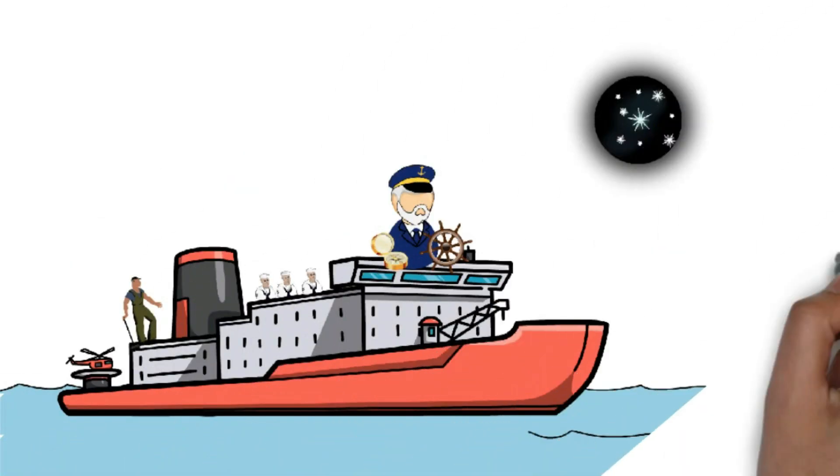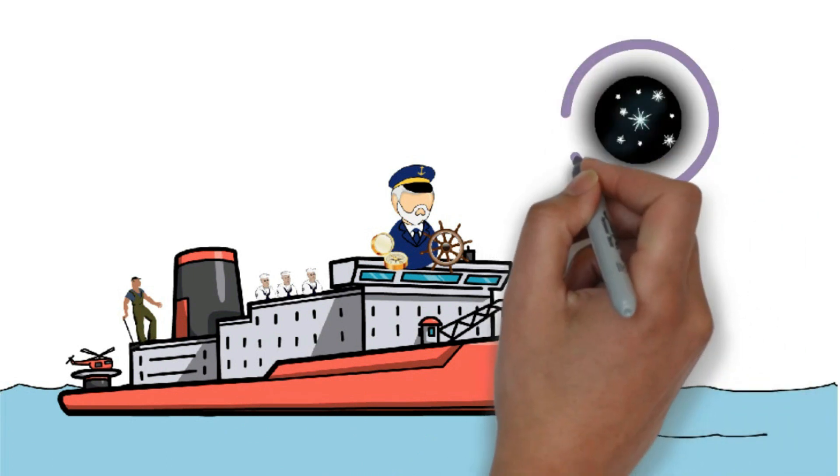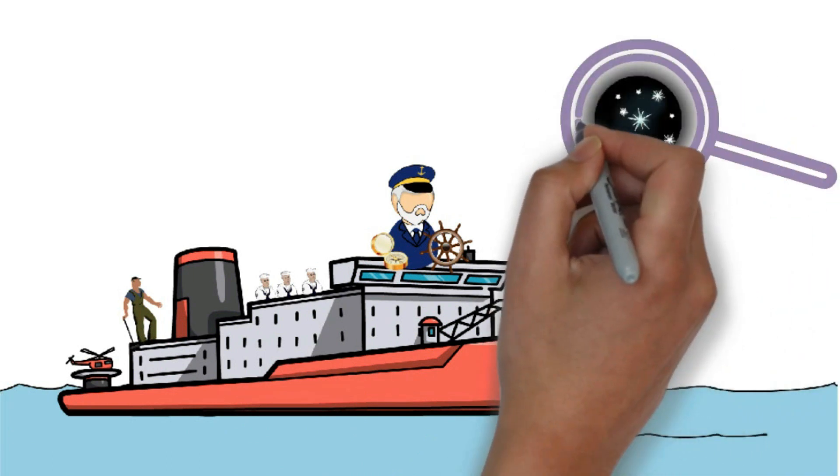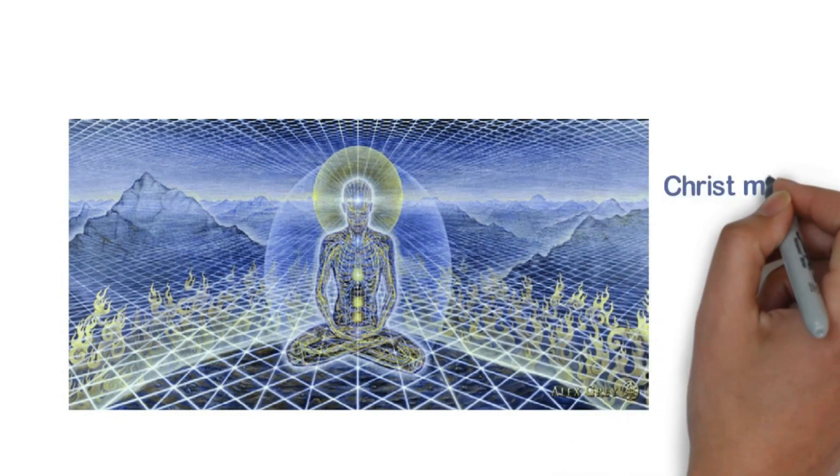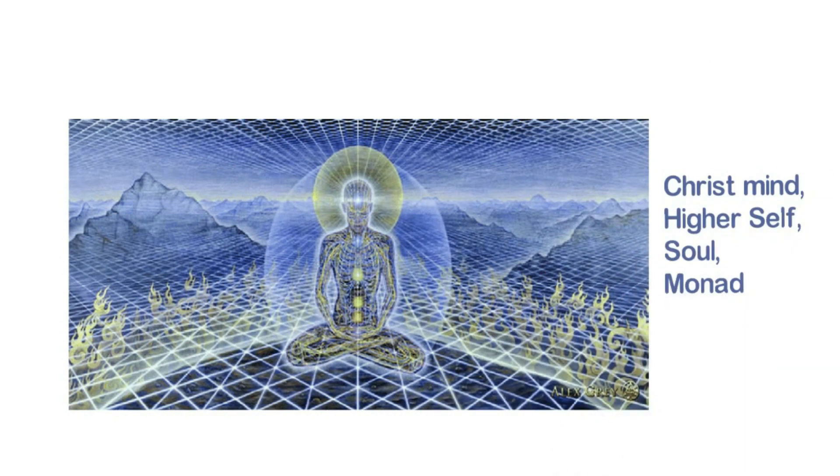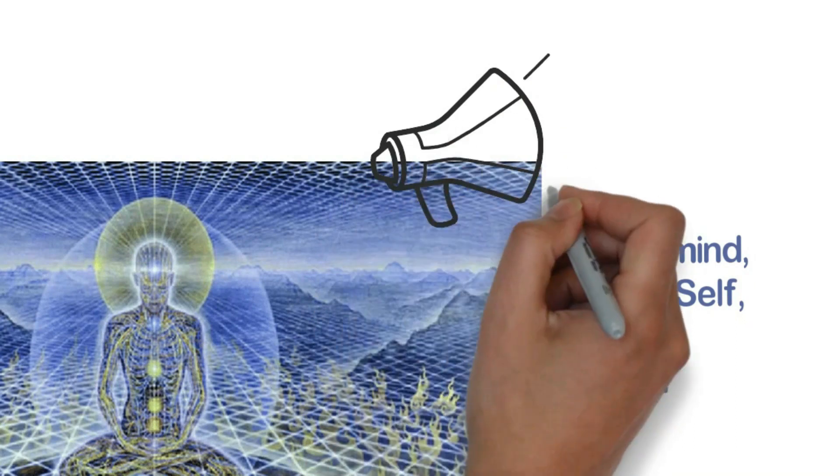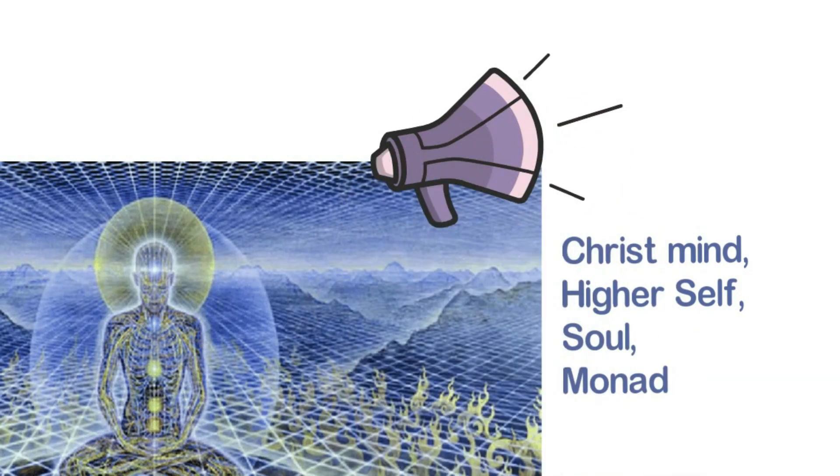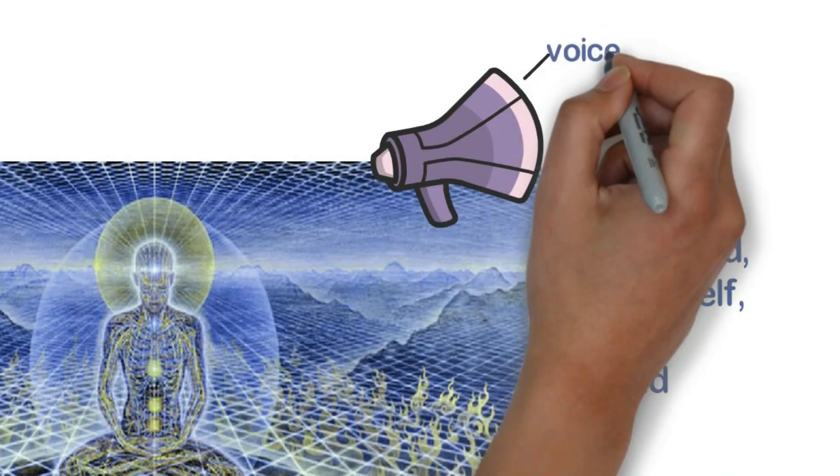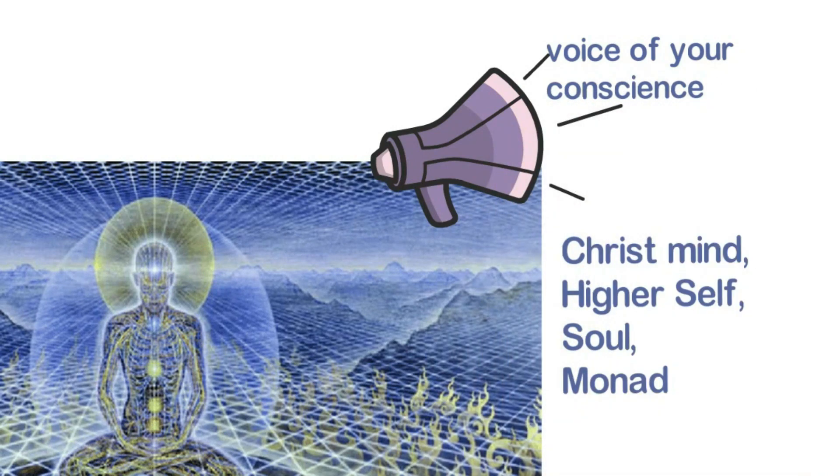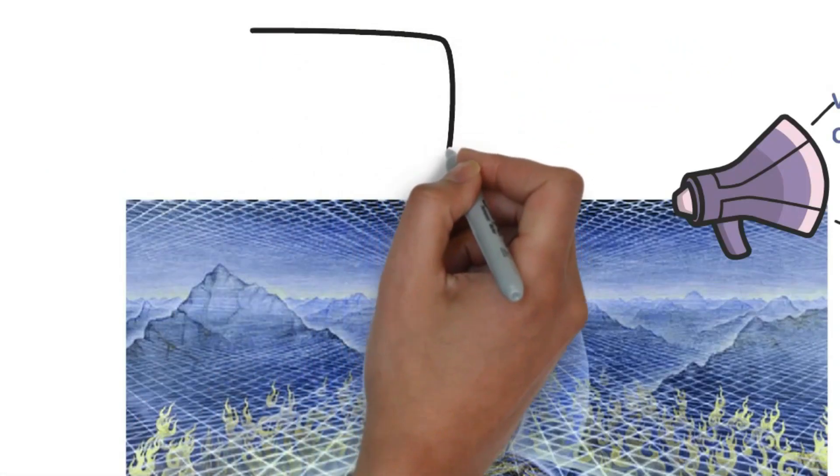Now, moving along to the superconscious mind, this is the mind that is represented by the north star in our analogy. This mind is also called Christ mind, higher self, soul, monad. And for simplicity, I have clubbed all these terms under the umbrella of superconscious mind. This is the mind that can also be considered your inner voice that gives you your morals, your integrity and ethics.